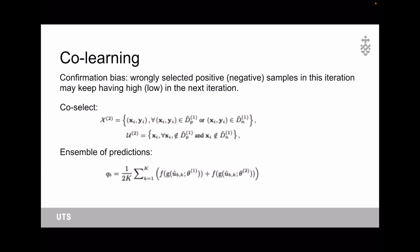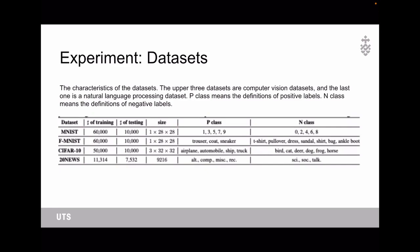Then we use co-learning to avoid confirmation bias, because the networks might wrongly select positive or negative samples in this iteration and keep having high or low confidence in the next iteration. So we utilize these two models to co-select confident samples during the sample selection phase. At each epoch, one network is the experiment part.